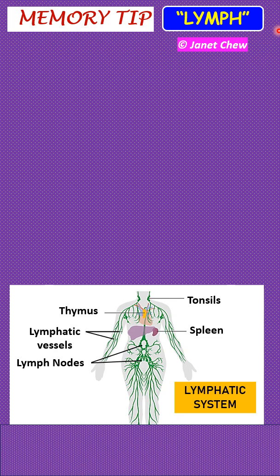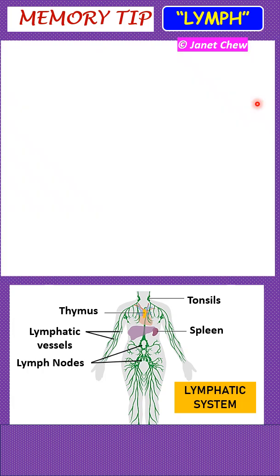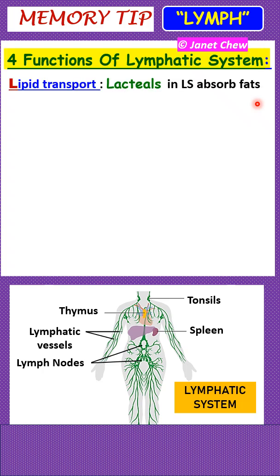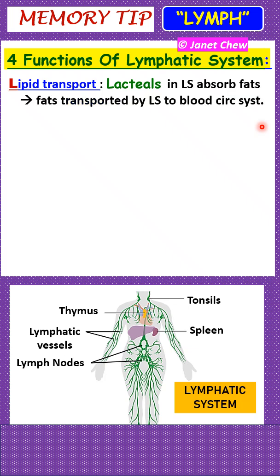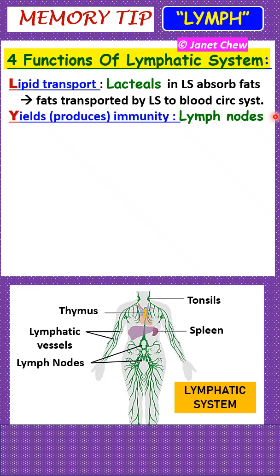Here is a very good memory tip for the four functions of the lymphatic system — think of the word LYMPH (L-Y-M-P-H). Firstly, L is for lipid transport. Lacteals, which are lymphatic capillaries in the lymphatic system, absorb fats or lipids in the small intestine, and these lipids are then transported by the lymphatic system to the blood circulatory system.